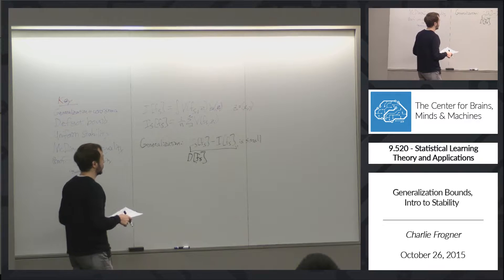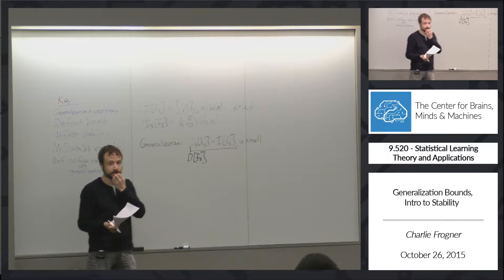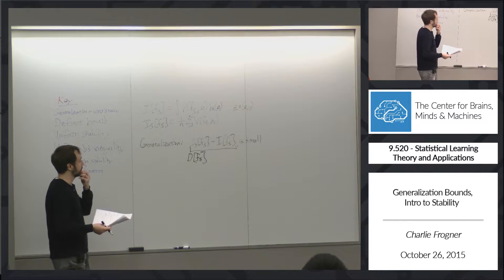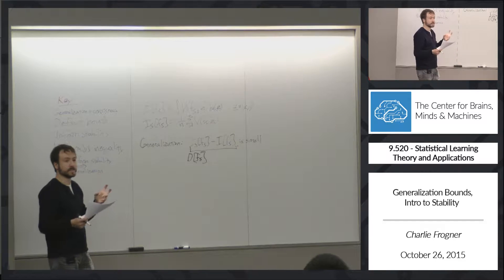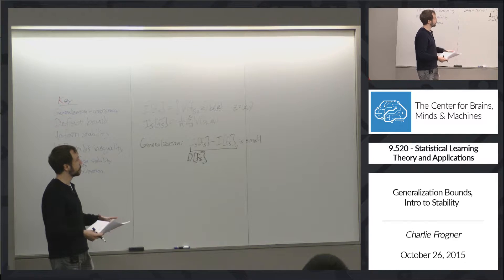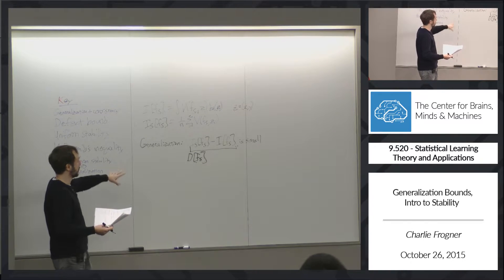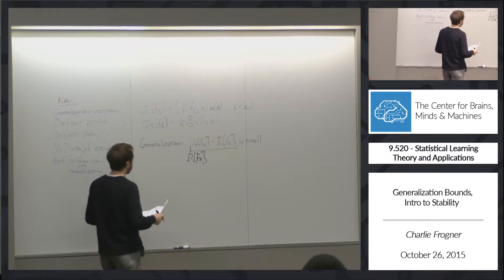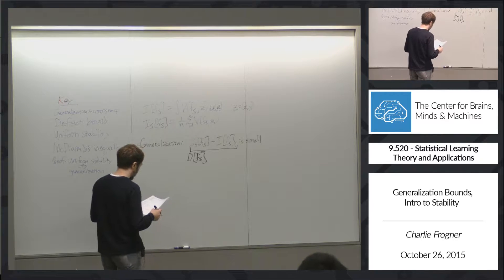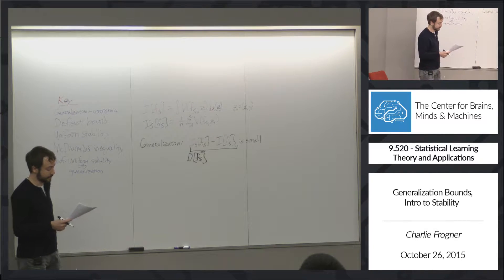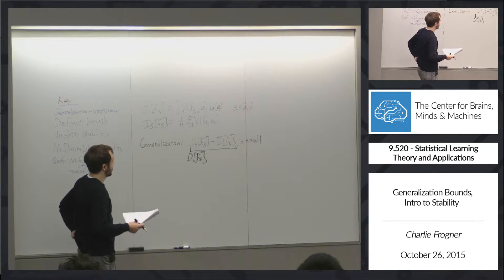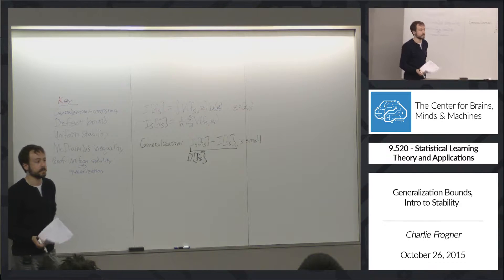Historically, those sufficient conditions were things like VC dimension, Rademacher complexity, and covering numbers — conditions directly on the hypothesis space showing how large it is. If the hypothesis space is small, the generalization bound is also small. As of around 2003, some people including Tommy and others in the lab established a different kind of sufficient condition for generalization, based on a concept from sensitivity analysis in control theory and engineering applications.